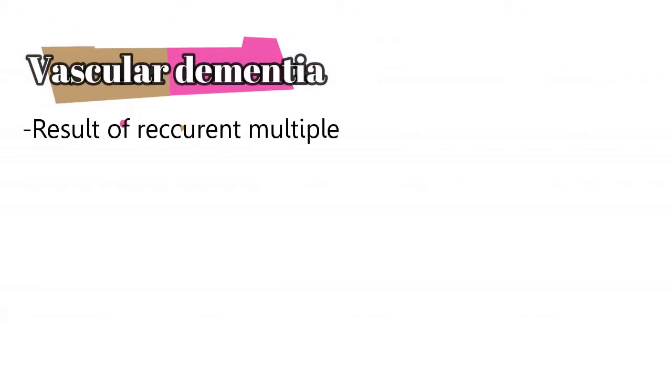We have vascular dementia, which is basically recurrent small infarcts here and there in the brain that can cause dementia with time. The main problem is cortical atrophy, so if we have multiple vascular problems, that's going to cause cortical atrophy and dementia.